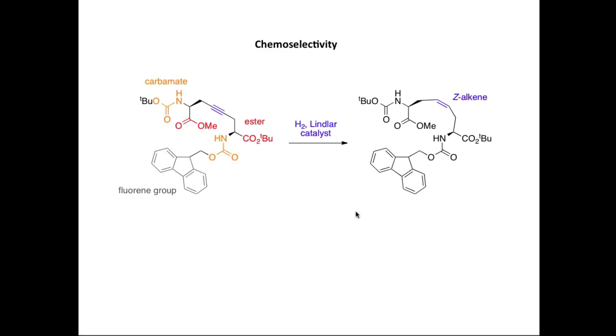Let's look at some slightly more complicated starting materials. In this starting material, we have two different carbamate functional groups in orange and two different ester groups in red, together with a carbon-carbon triple bond. If we react this complicated molecule here with hydrogen and Lindlar's catalyst, again, we get a very chemoselective transformation. It's only the carbon-carbon triple bond that reacts, even though we've got this aromatic system here called the fluorine group. It's only this carbon-carbon triple bond that's reduced stereoselectively, as we would predict, to the Z-alkene.